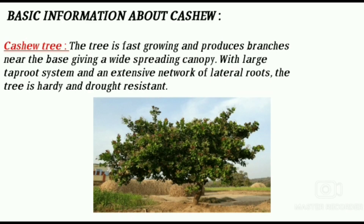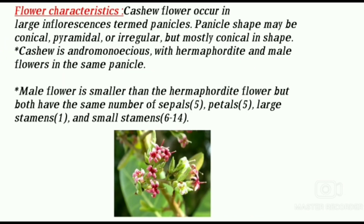Basic information about cashew. The cashew tree is fast growing and produces branches near the base, giving a wide spreading canopy. With a large taproot system and extensive network of lateral roots, the tree is hardy and drought resistant.